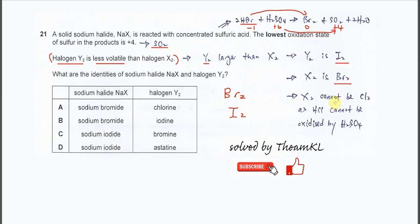Some of you might ask why X₂ cannot be chlorine. Because when sodium chloride reacts with concentrated H₂SO₄, it will form HCl and NaHSO₄, and this HCl will not further react with the concentrated H₂SO₄. That's why SO₂ will not be formed. So X₂ cannot be chlorine.